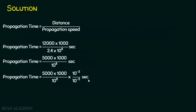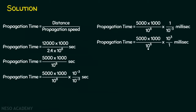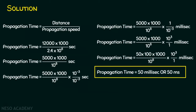Since 10⁻³ seconds equals 1 millisecond, we rewrite the expression as 5000 × 1000 divided by 10⁸, multiplied by 1/10⁻³ milliseconds. Taking 10⁻³ to the numerator makes it 10³, and we have 10⁸ in the denominator. Rewriting 5000 as 50 × 100, the entire numerator becomes 10⁸, which cancels with the 10⁸ in the denominator, giving us 50 milliseconds. The propagation delay or propagation time is 50 milliseconds.